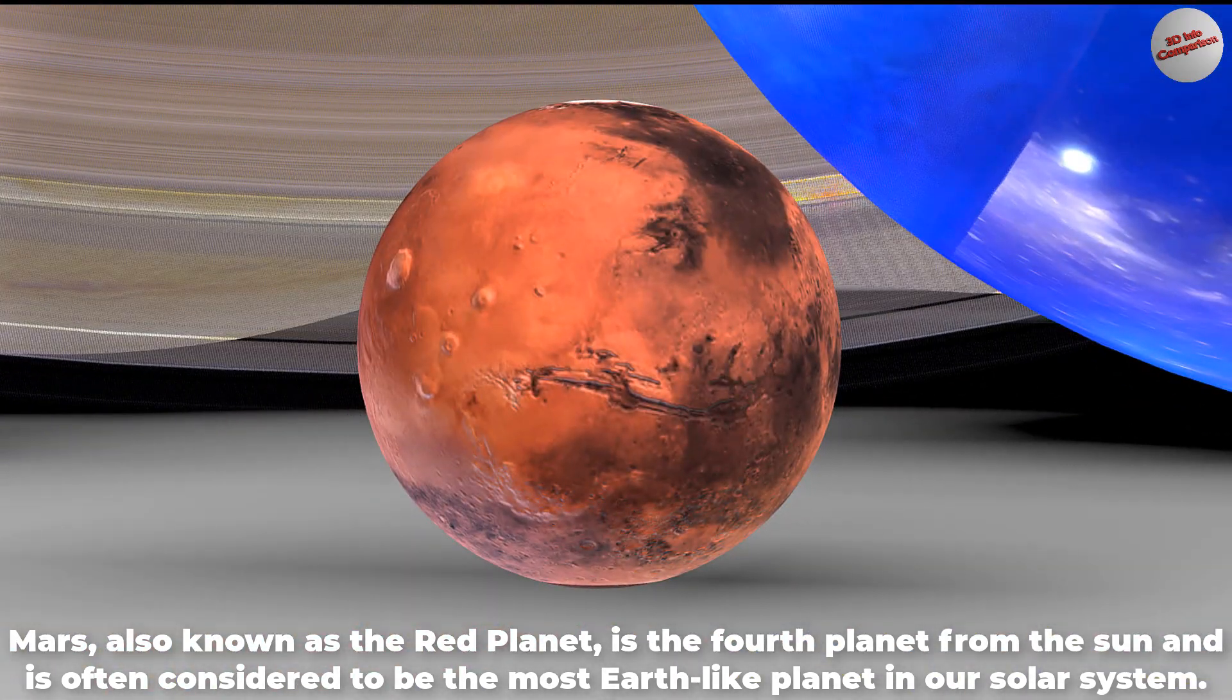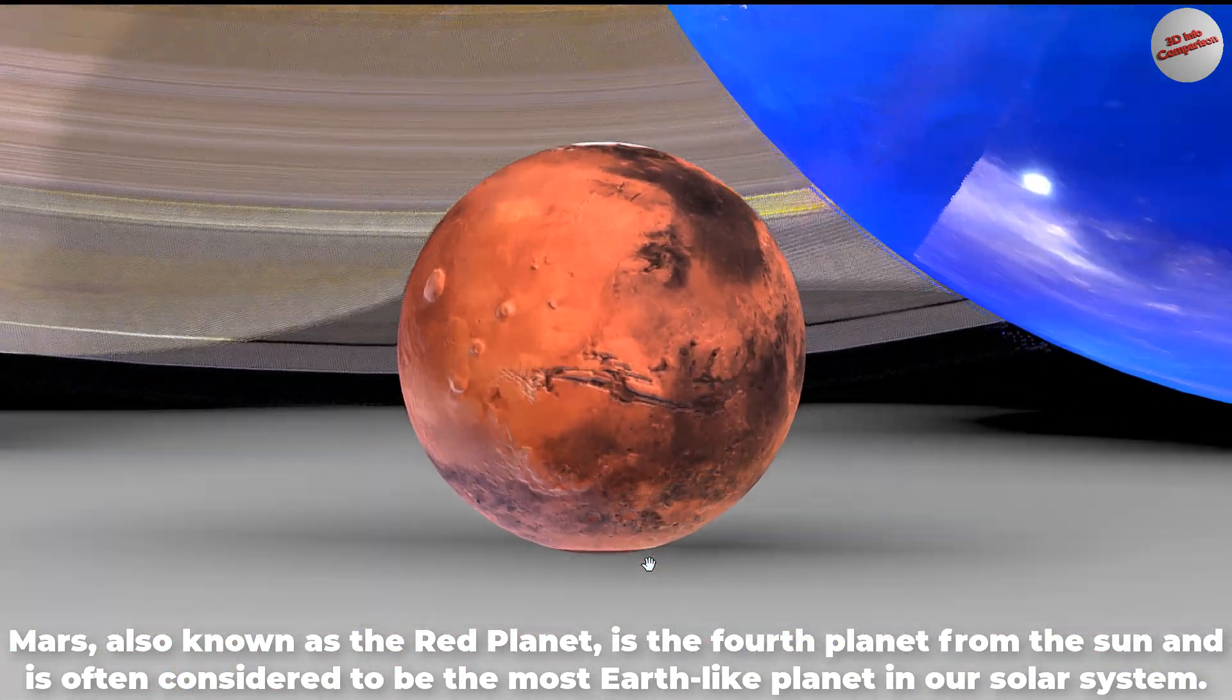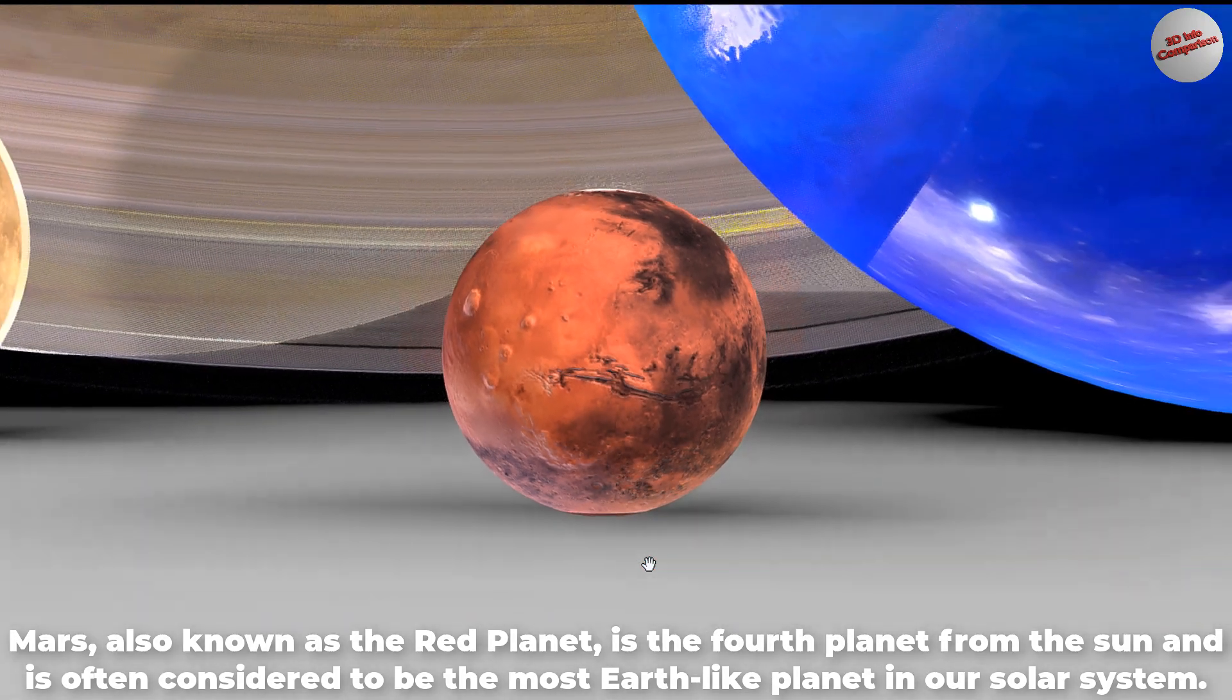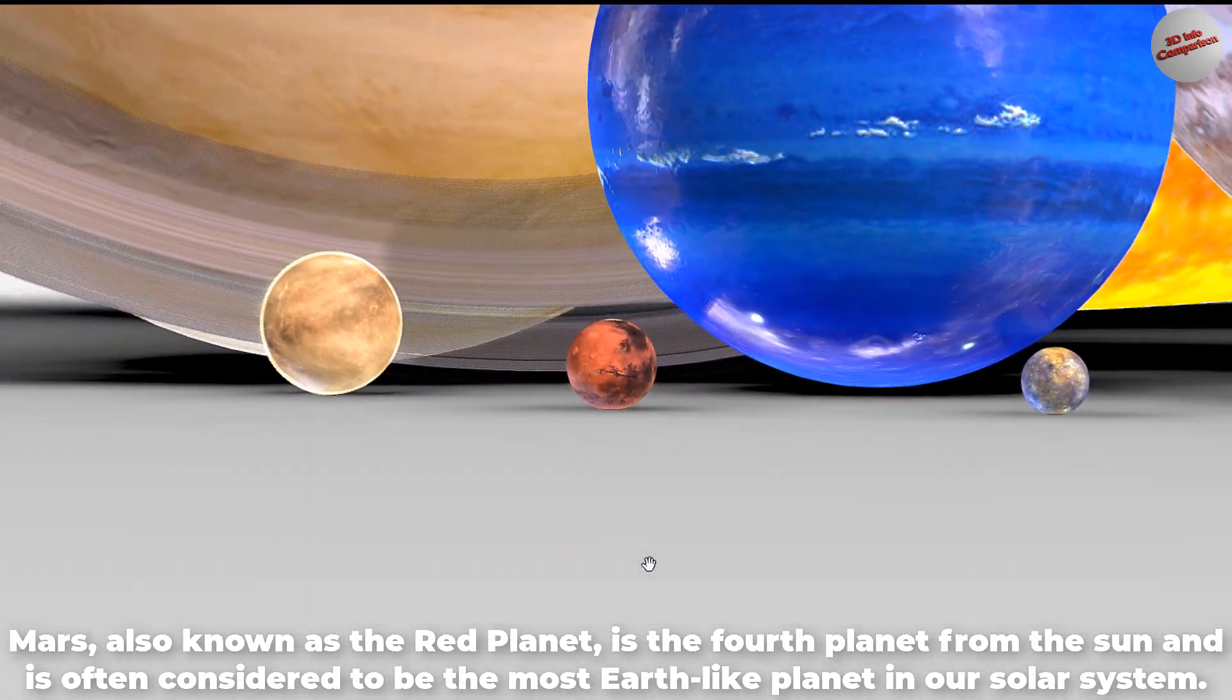Mars, also known as the Red Planet, is the fourth planet from the Sun and is often considered to be the most Earth-like planet in our solar system.